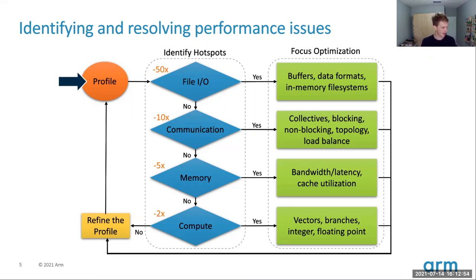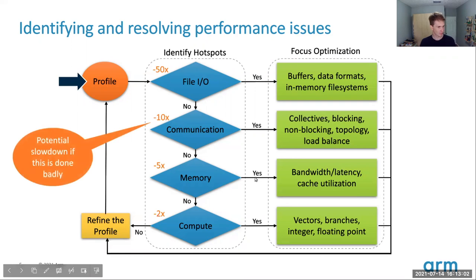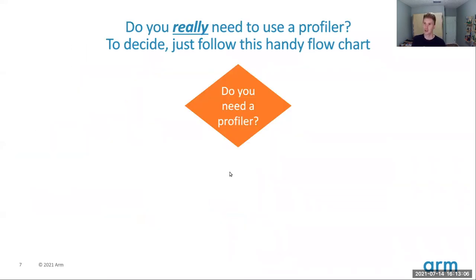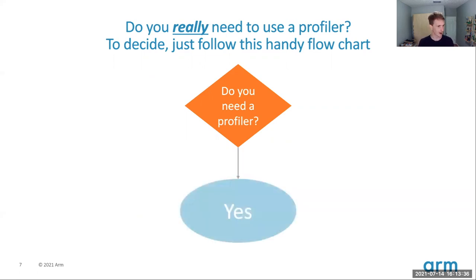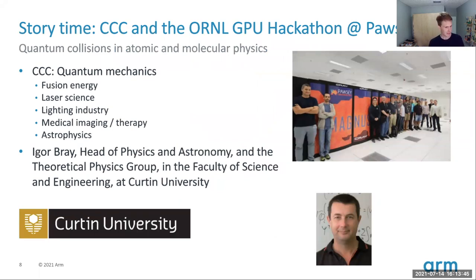The first question I usually get is: do I really need a profiler? Maybe the compiler is telling you all these loops have not vectorized — isn't that a clear indication to go fix vectorization? Or maybe you're the code expert with 30 years of atmospheric physics and you know exactly how it will perform. Here's a flow chart to help you decide: yes, you do need a profiler. You really do. Let me give you a story to explain why.